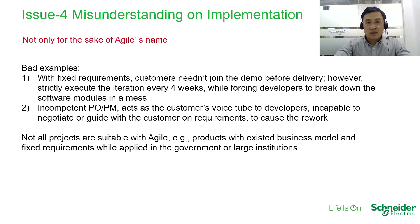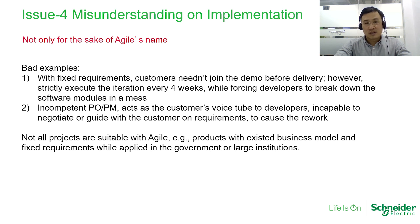The fourth misunderstanding: two bad examples. First, assuming that with fixed requirements, customers do not need to join the demo before delivering — this is a misunderstanding. Customer involvement is quite important for the Agile principle. Without customer involvement, the team executes iteration after iteration and forces developers to break down software modules in a disorganized way. This is a typical misunderstanding of Agile principle.